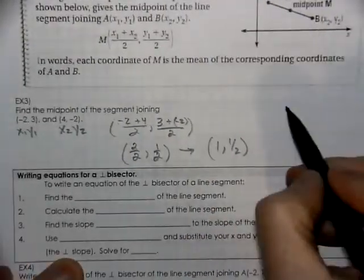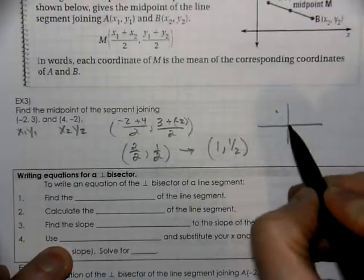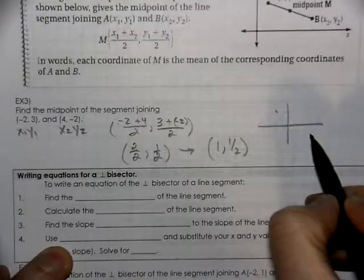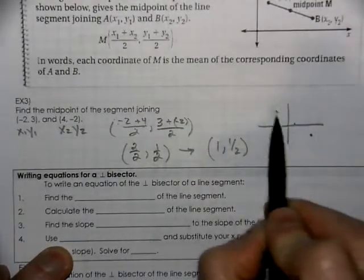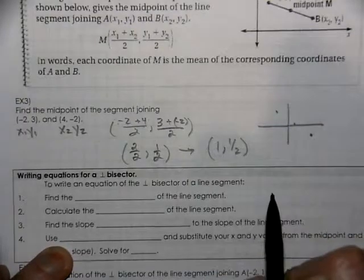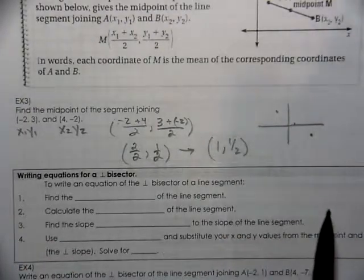So that takes us to a midpoint of 1 comma 1 half. If you were to make a quick sketch of the points of negative 2, 3 and 4, negative 2, 1 and 1 half would be somewhere right in between. Would be the midpoint between those two, so that's a realistic location.